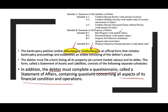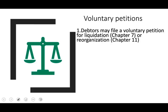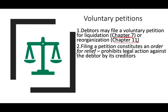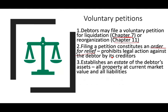The bankruptcy can either start voluntarily or involuntarily. Voluntarily is pretty straightforward — the debtor may file a voluntary petition for liquidation, which is Chapter 7, or reorganization, which is Chapter 11. There is no requirement; if you decide to file, you can file. Filing the petition constitutes an order for relief and prohibits legal action against the debtor by the creditors. It establishes an estate of the debtor's assets — all property and liabilities at current value. Think of it as a corporation or trust in which all assets and liabilities are listed.